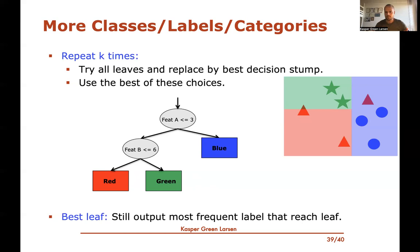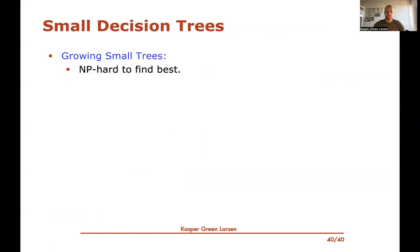The only change for multi-class is how we choose the leaf label: among all data points ending at that leaf — which may include red, blue, and green points — we simply return the most frequently occurring label. For instance, if there is one red and three blue points at a leaf, we return blue.